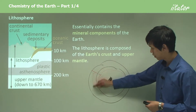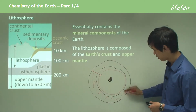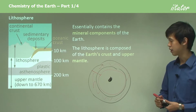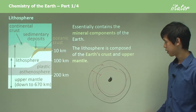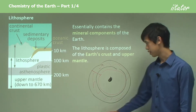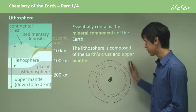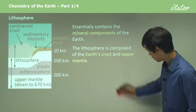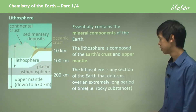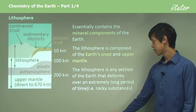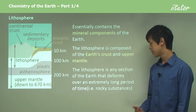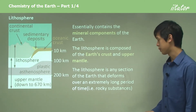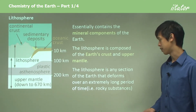All of this red section would be the lithosphere — just the crust and the upper part of the mantle. The lithosphere is any section of the Earth that deforms over an extremely long time period.